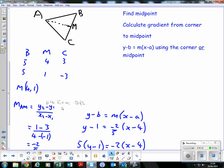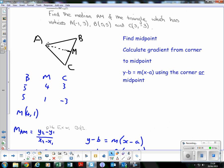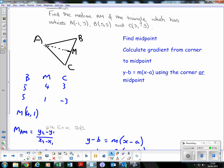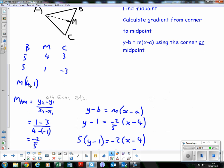Is it perpendicular? No, it's not. So we're actually going to use -2/5 as the gradient. Which point are we going to use? We can use A or M. I'm going to choose to use M.